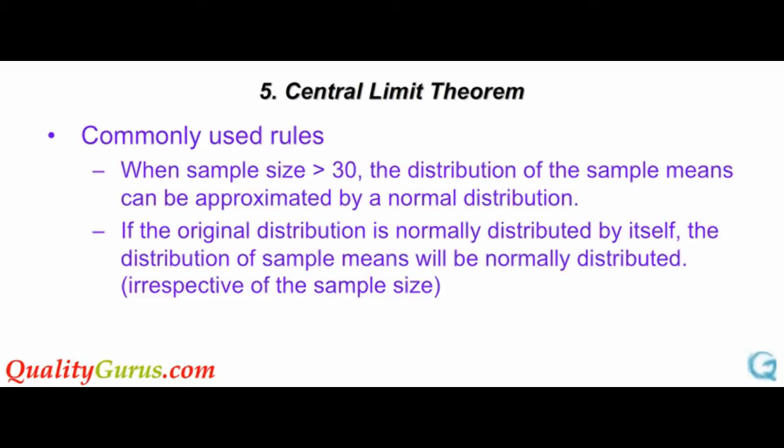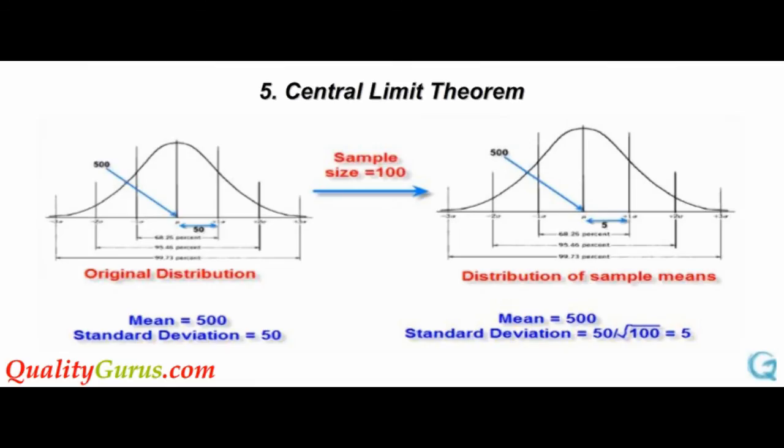Earlier, we said that the central limit theorem applies when the sample size is large. This slide gives the commonly used rule for applying the central limit theorem. Going back to the earlier example of exam marks, here we have two distributions. The distribution on the left is the original distribution. This has a mean of 500 and the standard deviation of 50. Sample of 100 students is drawn from the original data, and a new distribution is drawn for the sample means on the right. The distribution of sample means will have the same mean as 500, while the standard deviation of this new distribution would be 50 divided by the square root of the sample size. This completes the presentation on the normal distribution.